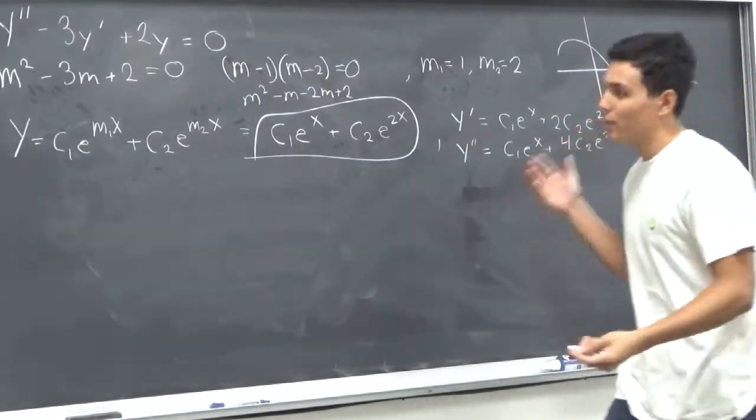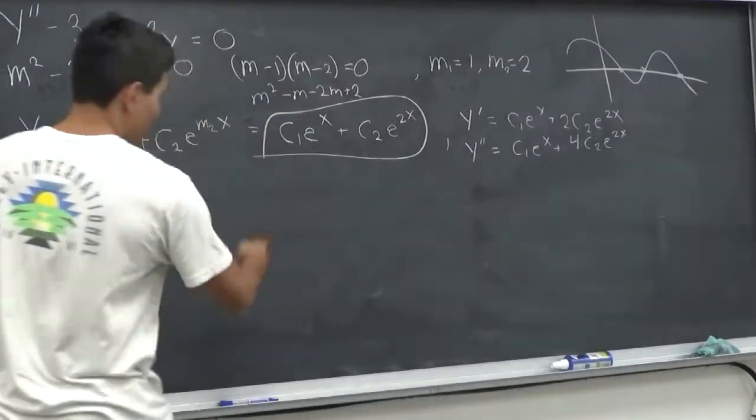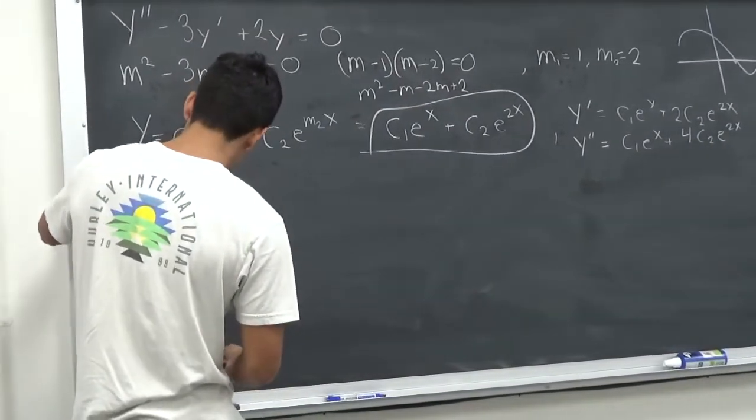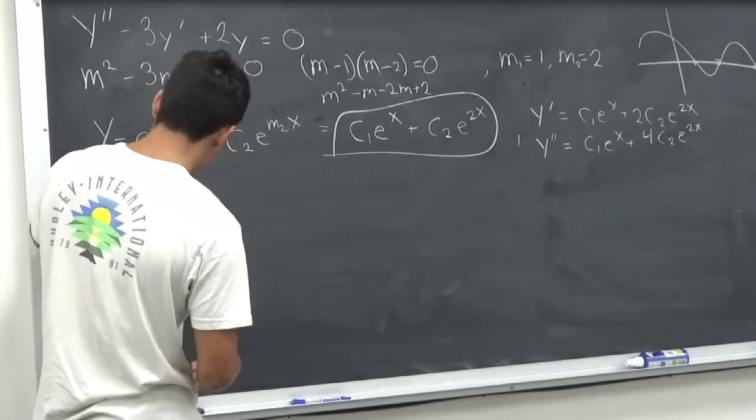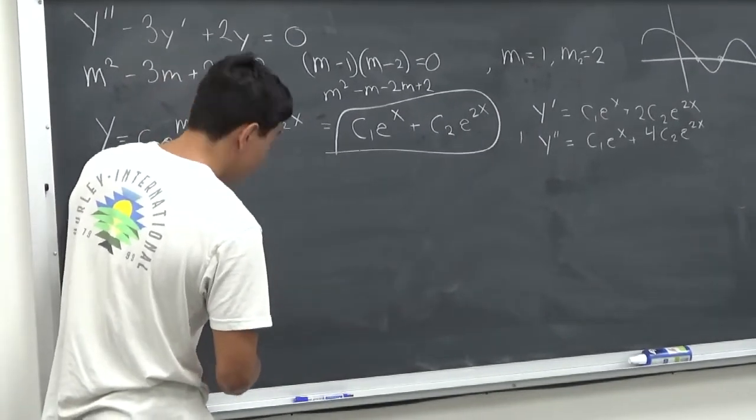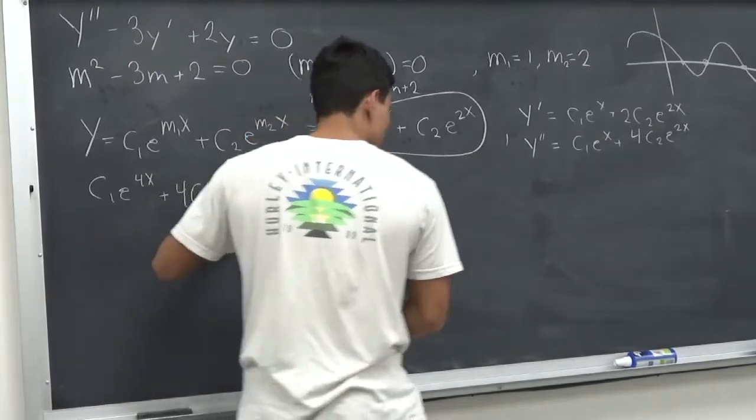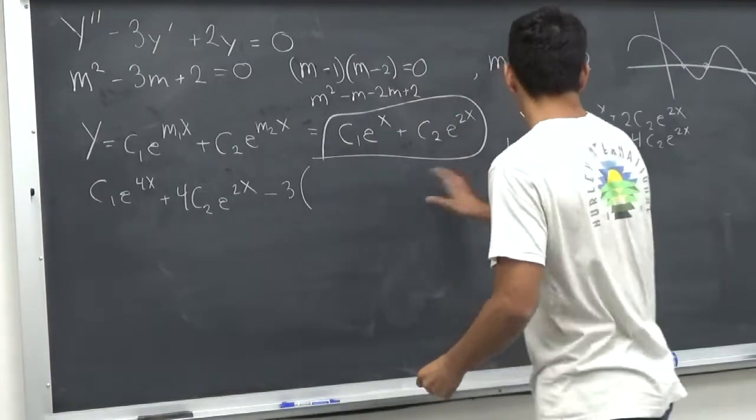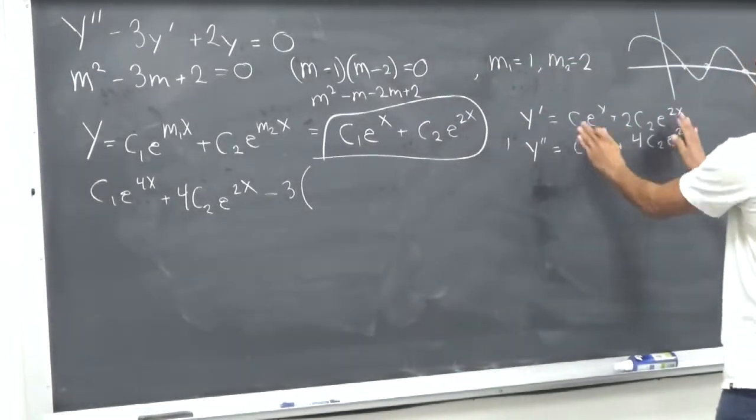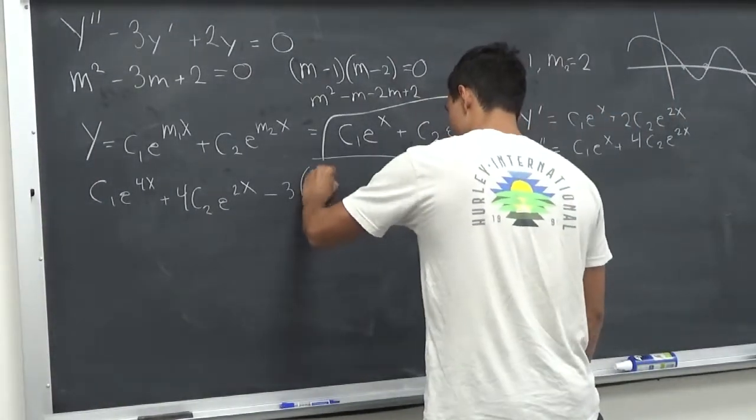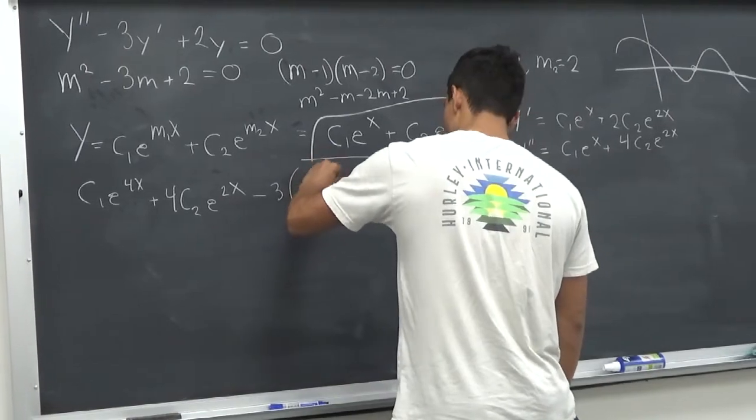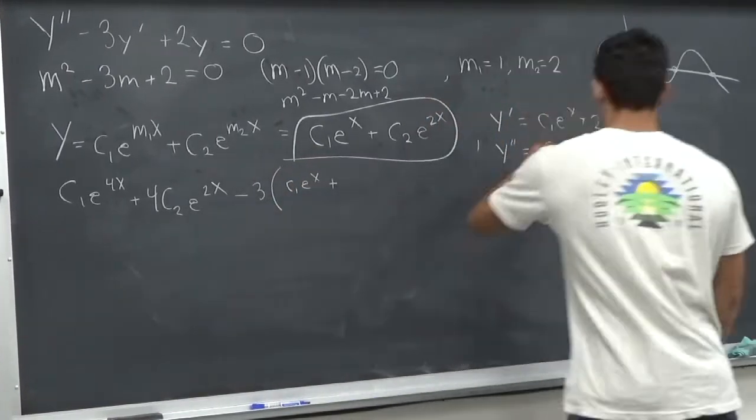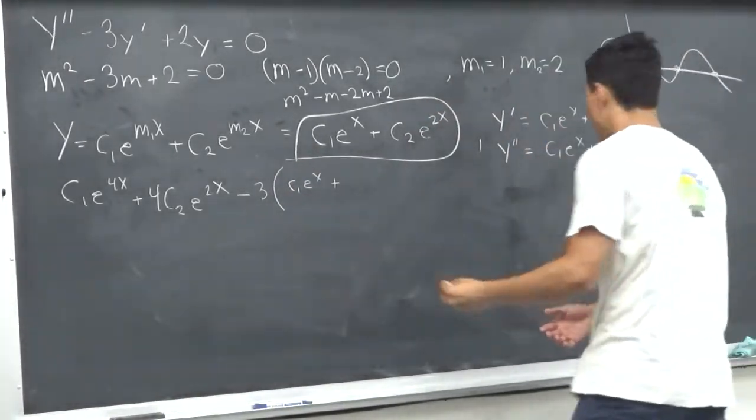Okay, so then I'm going to recreate the differential equation over here. So it would be C1 e to the x plus 4 C2 e to the 2x minus 3 and 3 of what? 3 of this. So it's going to be C1 e to the x plus, so the plus here should make it look a little bit nicer,